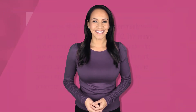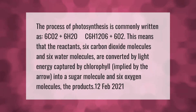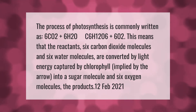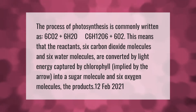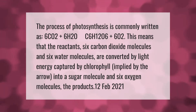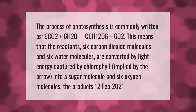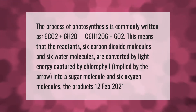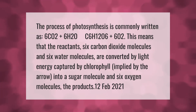The process of photosynthesis is commonly written as: 6CO₂ + 6H₂O → C₆H₁₂O₆ + 6O₂. This means that the reactants — six carbon dioxide molecules and six water molecules — are converted by light energy captured by chlorophyll into a sugar molecule and six oxygen molecules, the products.